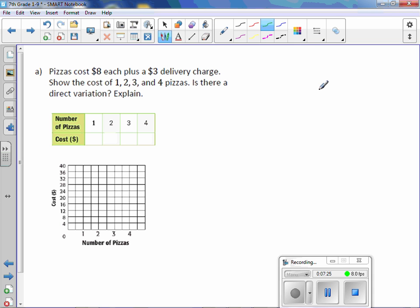So 1 pizza would cost $8 plus a $3 fee, which means 1 pizza would cost $11. 2 pizzas, well, 2 times $8 a piece is $16, plus a $3 fee is $19. 3 pizzas, 3 pizzas is $24, 3 times $8, plus a $3 fee, which would be $27. Running out of room. And 4 pizzas, 4 times $8 is $32, plus 3, it would be $35.